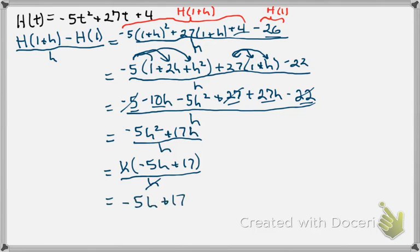Or if we want, we can write it as 17 minus 5h, which is the average rate of change between 1 and 1 plus h.